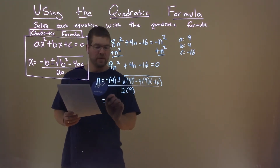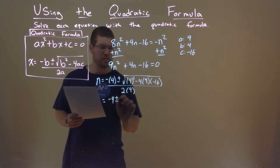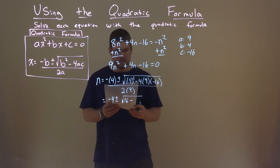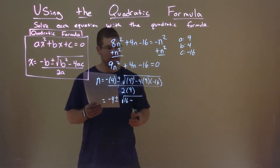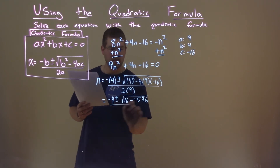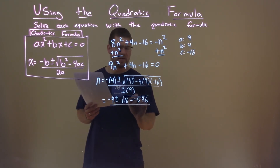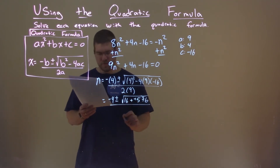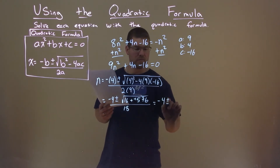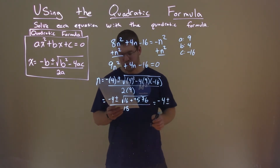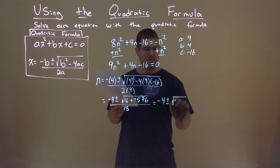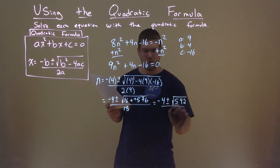Now let's simplify this. Negative 4 plus or minus the square root of 4 squared — which is 16 — minus 4 times 9 times negative 16, and that's negative 576. Minus a negative is like adding a positive. 2 times 9 is 18. So we have negative 4 plus or minus the square root of 16 plus 576, which is the square root of 592, over 18.